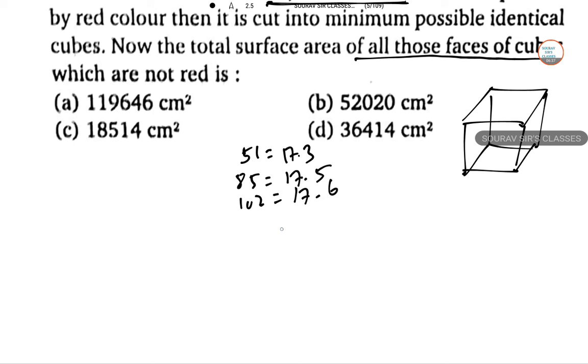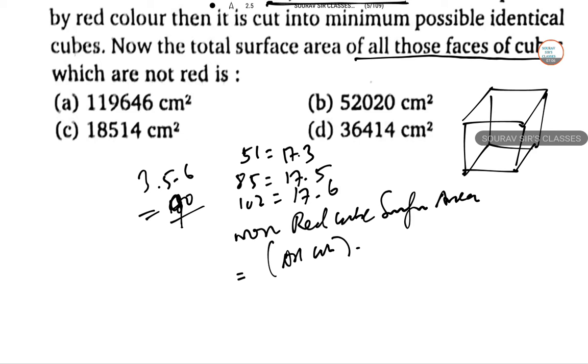So the minimum possible number of cubes equal to 3 into 5 into 6, that's 180, sorry, 90. So the total surface area of the non-red cube will be total surface area of all cubes minus cuboid.